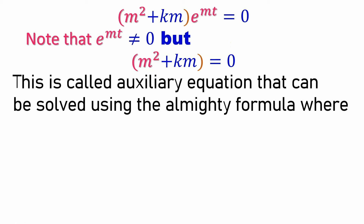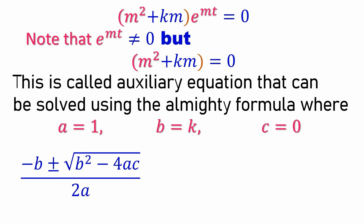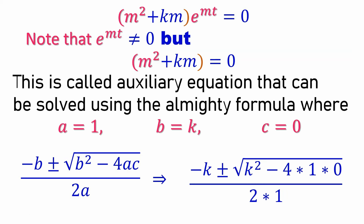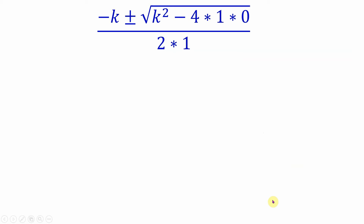Let's solve the auxiliary equation. Here a = 1 (coefficient of m²), b = k (coefficient of m), and c = 0. Substituting everything into the quadratic formula, we get m = (−k ± √(k² − 4·1·0)) / (2·1).